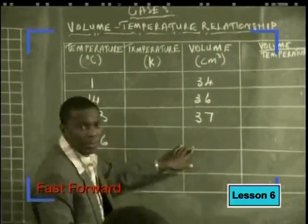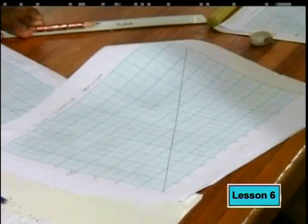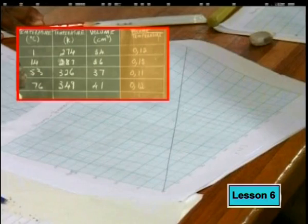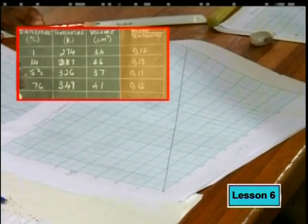Let's join Nelly and Mr. Mashapa again as they record and analyze the data the learners collected. While Mr. Mashapa takes down the readings from group 1, can you predict what a graph drawn from these results would look like? Do you agree that these results should give us a straight-line graph? Although the calculations do not give us an exact constant, this could be due to experimental errors. If you take the average of the answers the learners got, it works out to a constant of about 0.12. This confirms that a specific relationship exists between volume and temperature.